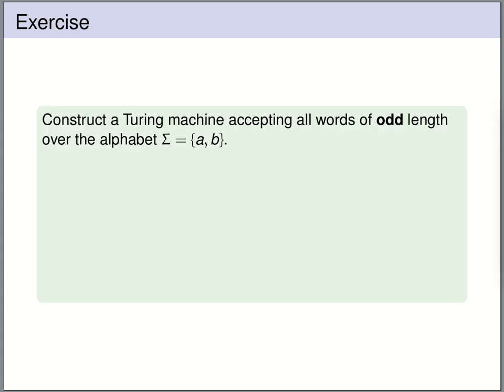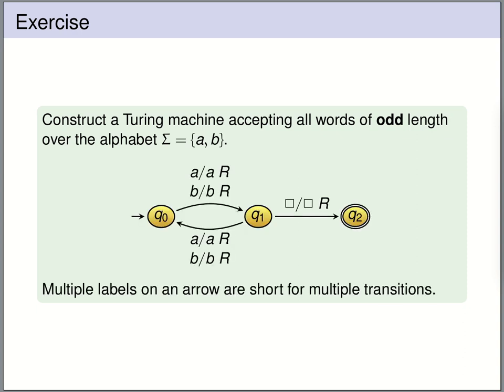Let's construct a Turing machine that accepts all words of odd length over the alphabet {a, b}. We just need to walk over the word and remember whether we have read an even or odd number of letters — so we only need two states, q0 and q1, to track the parity.